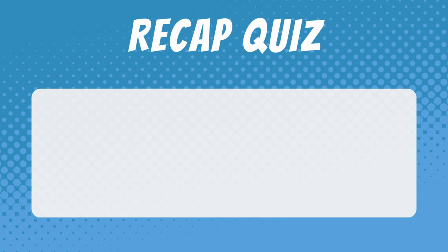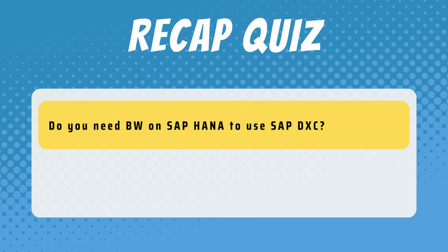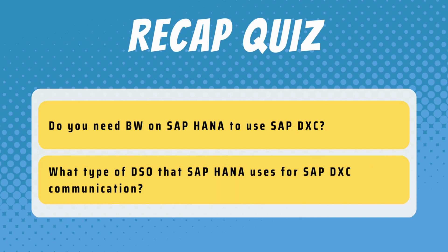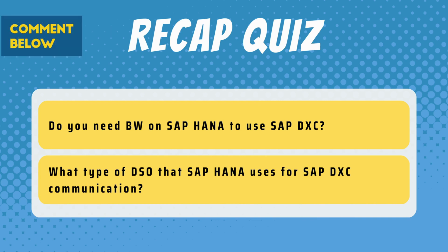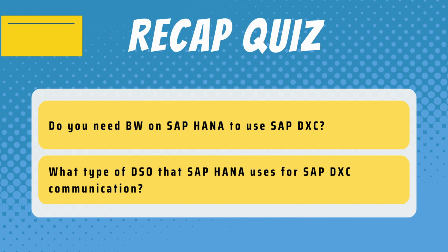Let's now have a quick recap. Do you need BW on SAP HANA to use SAP DXC? What type of DSO does SAP HANA use for SAP DXC communication? Let me know your answers in the comment section below. Thank you for watching.